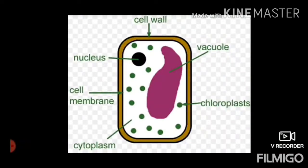A cell is the basic structural, functional, and biological unit of all living things. A cell is the smallest unit of life. It consists of a nucleus inside the cell, and it has a thin cell wall and a cell membrane. Inside the cell is a vacuole, and the green pigment formation is given by the chloroplasts. The liquid present inside the cell is called cytoplasm. When so many cells are combined, a tissue or an organ is formed.